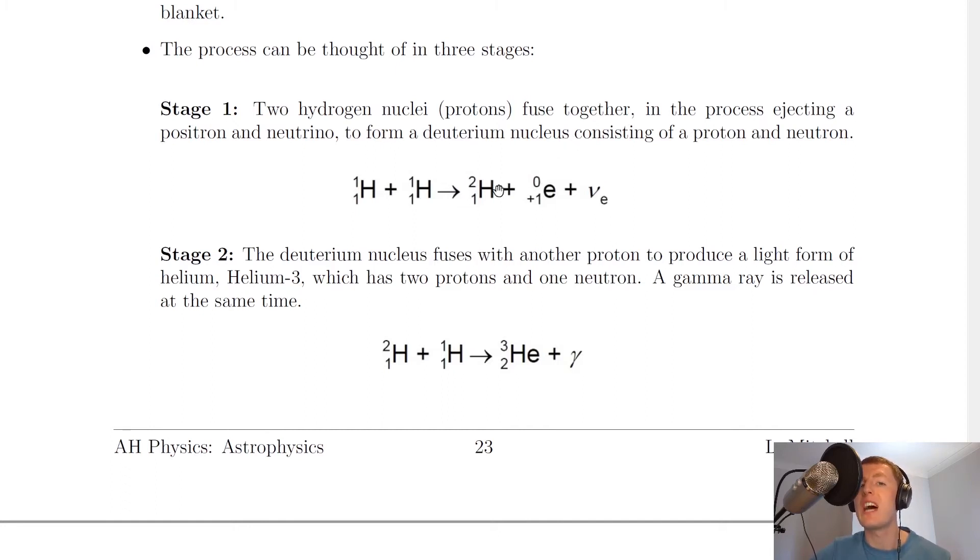That's why the mass number for deuterium is two, because it contains the proton and the neutron.